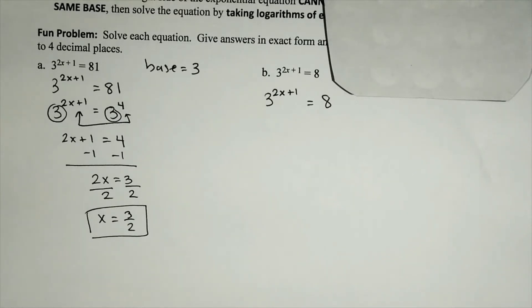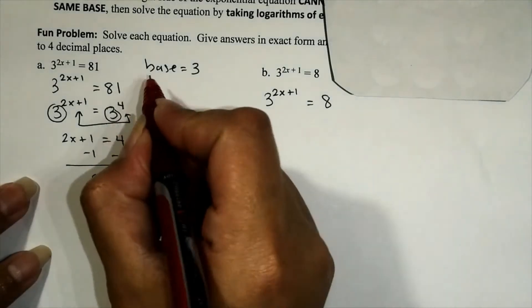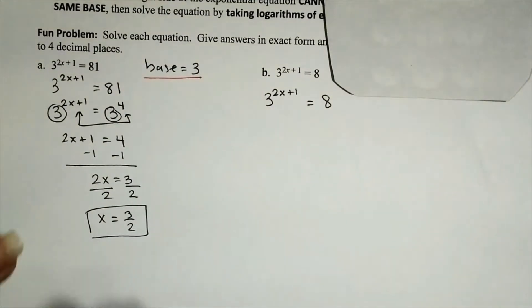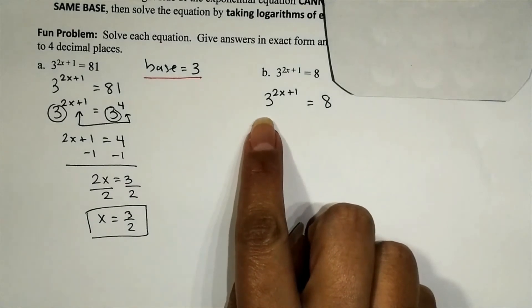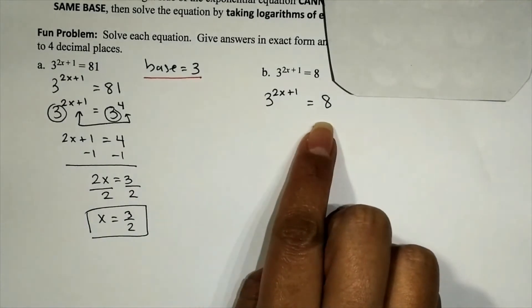So what do we do when that happens? Since we cannot easily fix it so the bases are the same, then there's no way around it. We're going to have to take the logarithm of each side of the equation. We can take the logarithm base whatever your heart desires. I feel like taking the logarithm base 3, because I have a 3 here. I also feel like taking maybe logarithm base 8 instead?